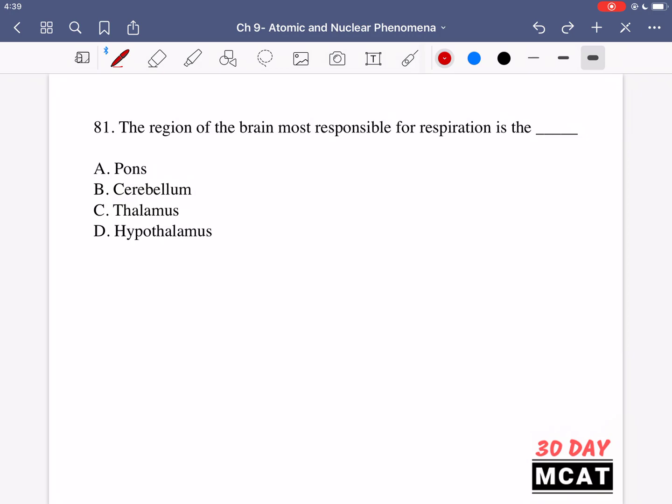In question 81 it says the region of the brain most responsible for respiration is the blank. So which region is it? It is A. A is correct. The pons has nuclei which are the most critical for things like respiration and ventilation. This is a part of the brain where those are located.